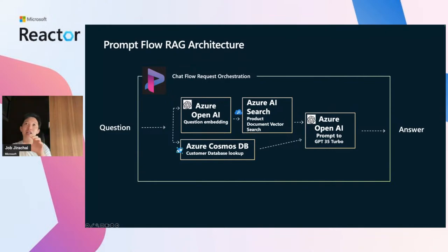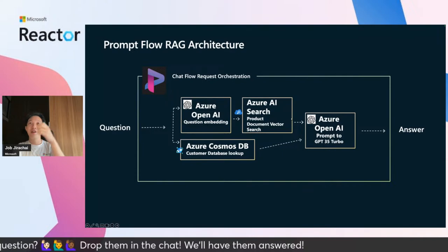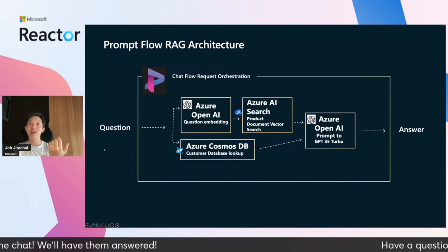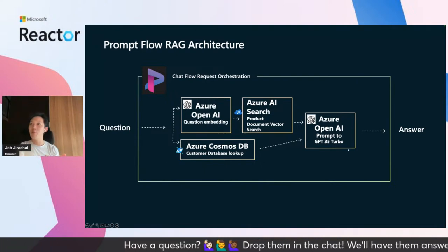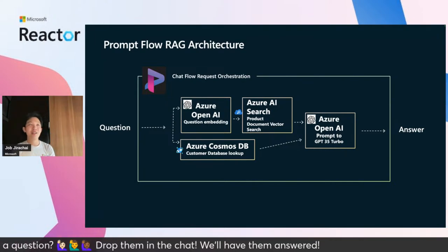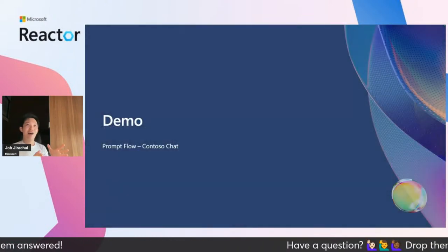This is the architecture we apply — the RAG architecture to our application. We use the GPT ADA model for question embedding, store the index and data in AI Search, and then AI Search retrieves the data from the existing index, gathering from the customer database for GPT-3.5 Turbo to combine and answer back to the users. In the next slide, we move to the demonstration phase using Prompt Flow.